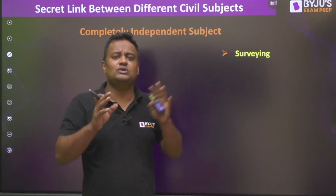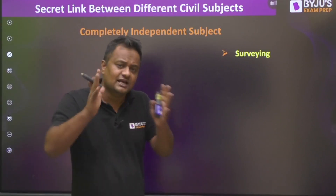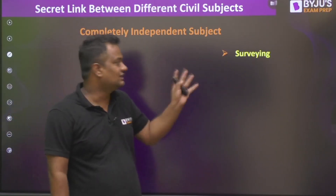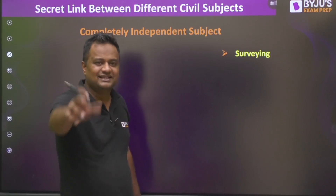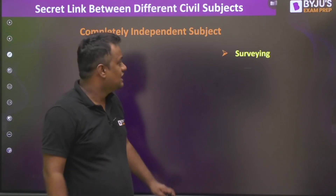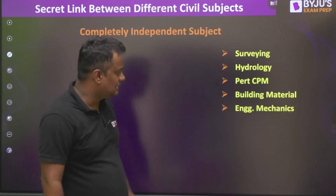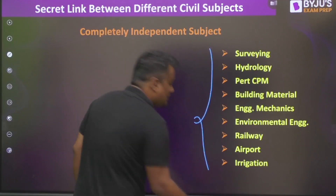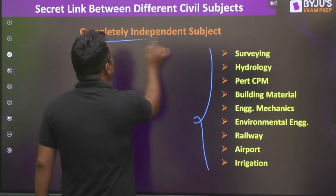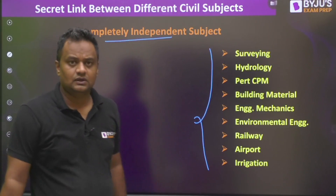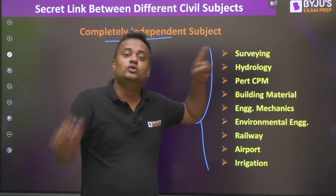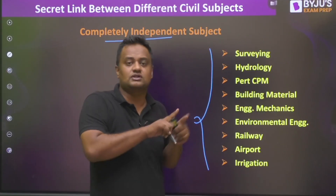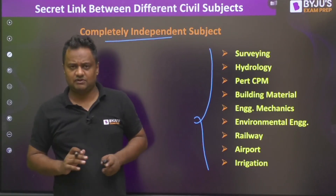Surveying is the only subject of civil engineering that has nothing to do with physics — no forces, no stress — it is 99% purely mathematics. So, Surveying, Hydrology, Geotechnical (participium), Building Materials, Engineering Mechanics, Environmental Engineering, Railway, Airport, and Irrigation — these are the subjects you can study at any point of time. They are completely independent; no other civil engineering knowledge is required.